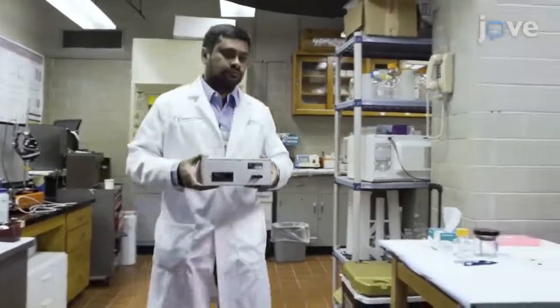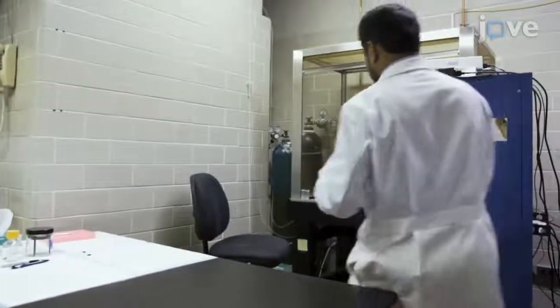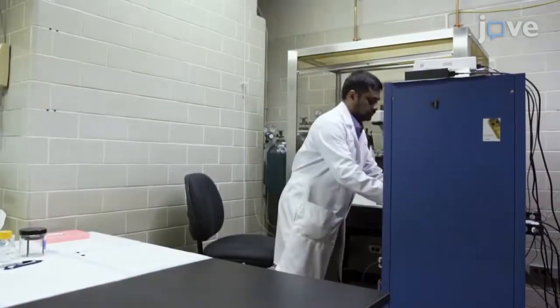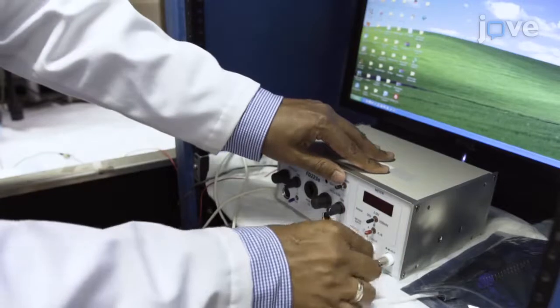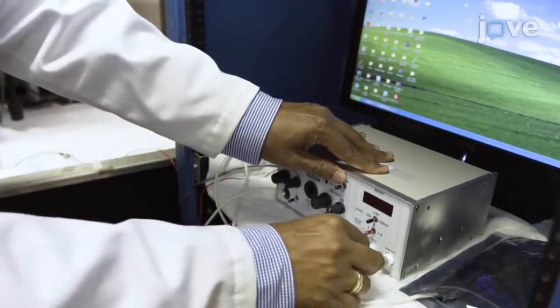Before beginning the procedure, place a dual-channel differential electrometer amplifier close to the vessel chamber at the desired location. Use a BNC-BNC cable to connect the output of the amplifier channel A or B to the channel input of the digitizer.